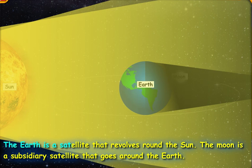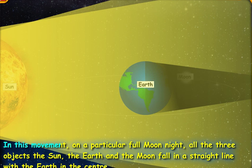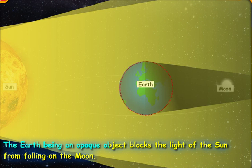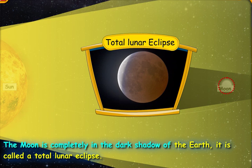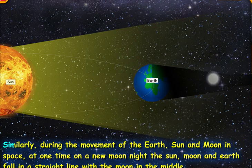The earth is a satellite that revolves around the sun. The moon is a subsidiary satellite that goes around the earth. In this movement, on a particular full moon night, all the three objects—that is the sun, the earth, and the moon—fall in a straight line with the earth in the center. The earth being an opaque object blocks the light of the sun from falling on the moon. The moon is completely in the dark shadow of the earth. It is called a total lunar eclipse.